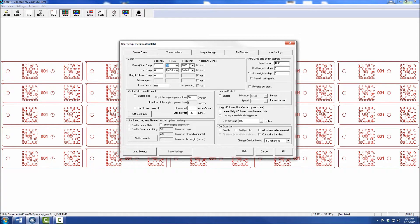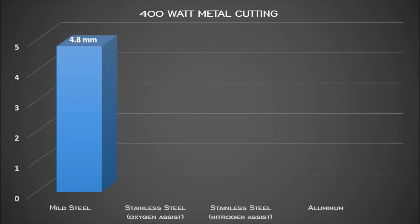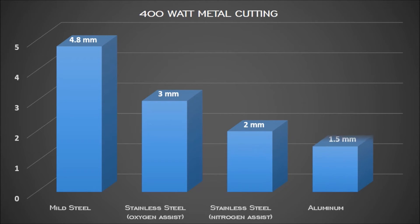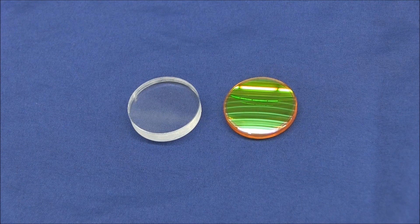Our largest 400-watt laser can cut up to 4.8mm mild steel, 3mm stainless steel with oxygen assist, 2mm stainless steel with nitrogen assist, and up to 1.5mm aluminum.